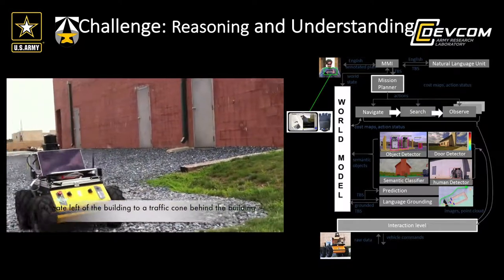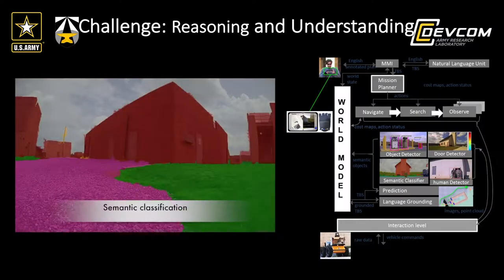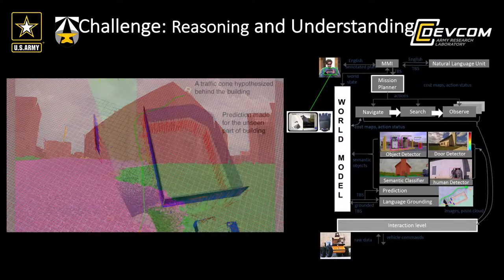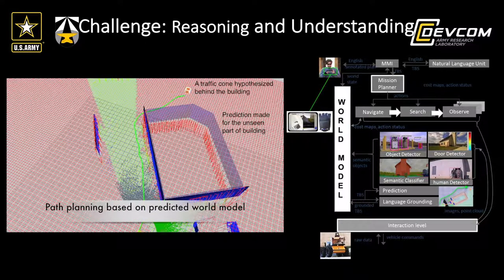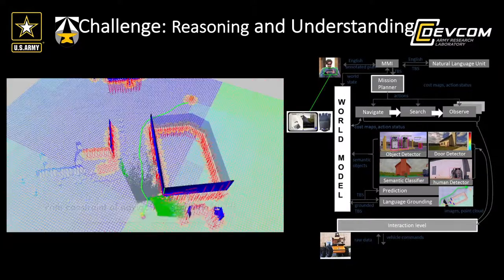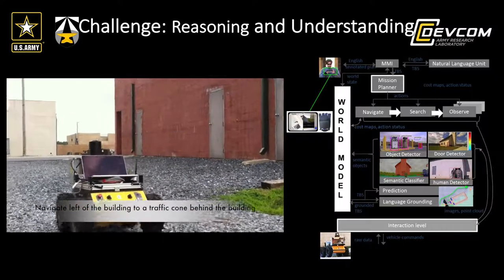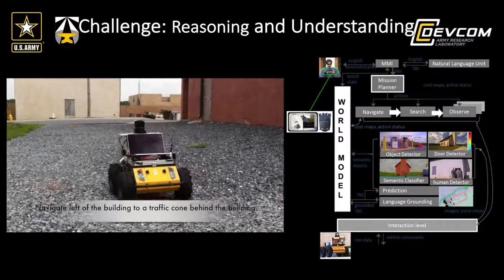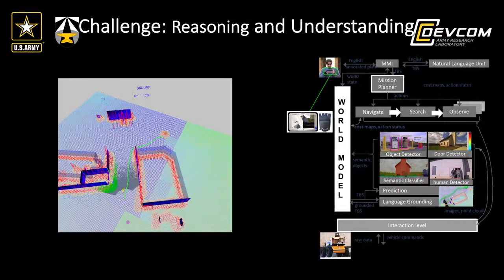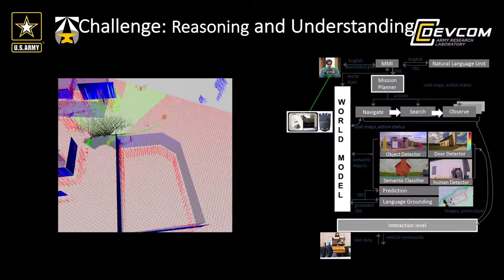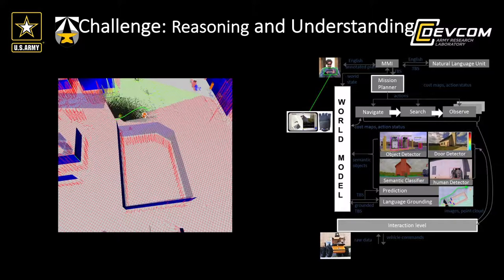The first challenge we addressed is detailed online semantic description of an unstructured environment. This is an example from earlier in the program, showing one of the first demonstrations of online semantic labeling of videos that can be used for navigation and reasoning. Moving forward, deep learning came in, and we now have techniques that are much more elaborate, allowing us to do this online semantic labeling and integrate it into the entire system to do reasoning on the fly.